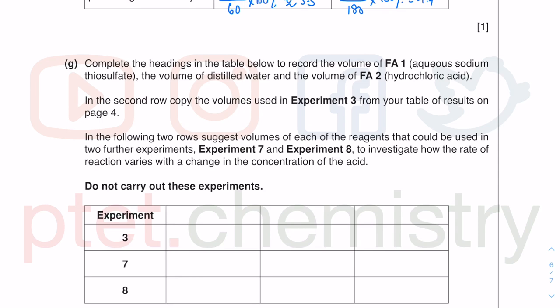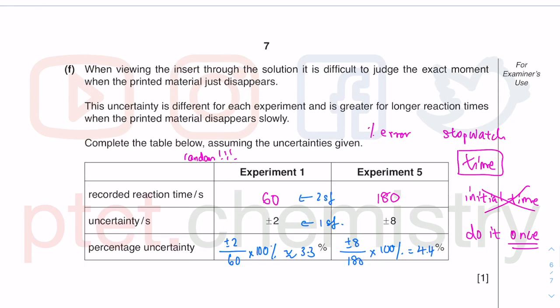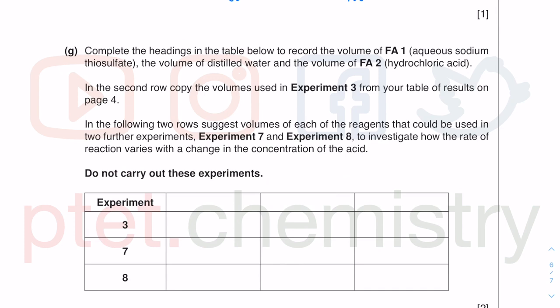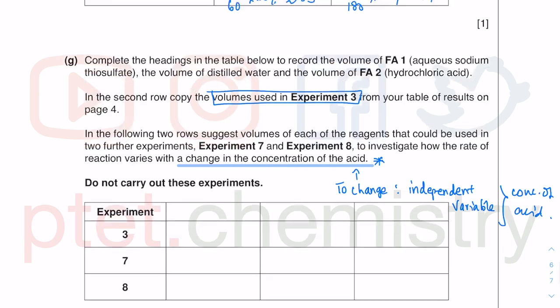Now you want to change the concentration of acid. If you want to change the concentration of acid, this becomes your independent variable because the acid is now changing. So the independent variable is now the concentration of acid in experiments 7 and 8. You want to copy the volumes used in experiment 3 for the thiosulfate side.